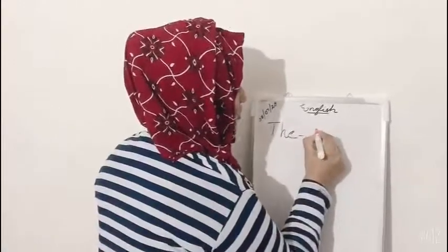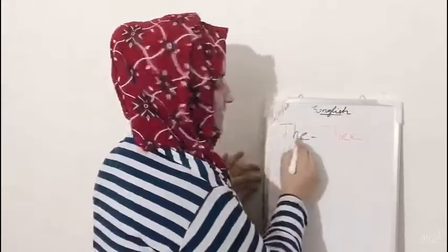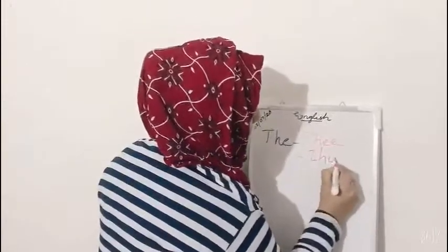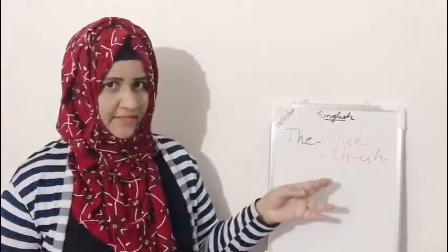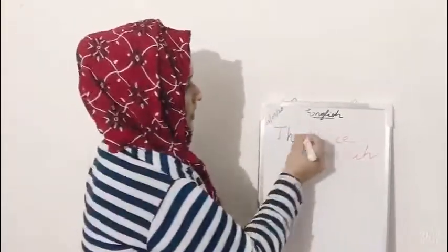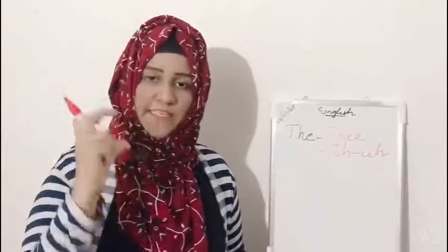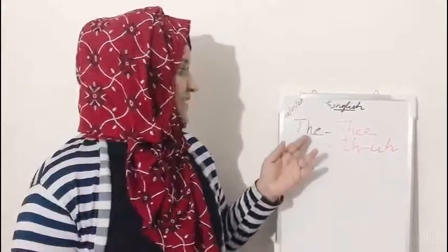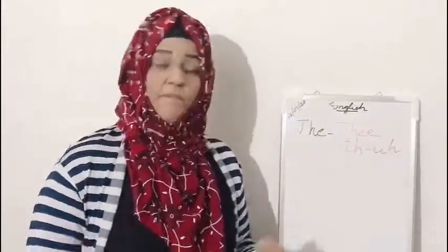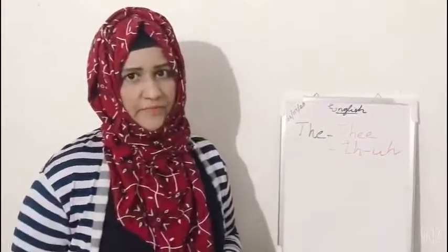We pronounce this T-H-E as 'thee'. And sometimes we pronounce this T-H-E as 'the'. So, we pronounce this T-H-E as 'thee' before a word whose beginning alphabet is a vowel and it should give a vowel sound. We pronounce this T-H-E as 'thee' before a word whose beginning alphabet is a vowel and it should give a vowel sound.